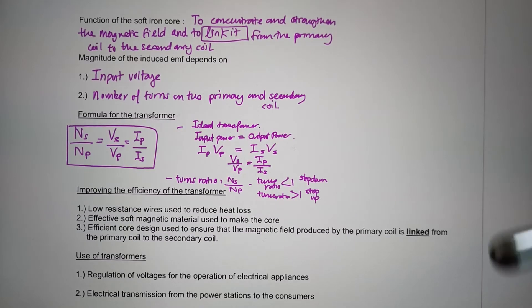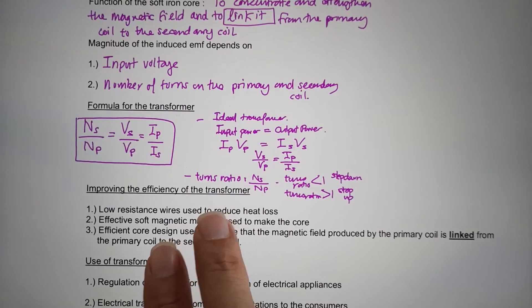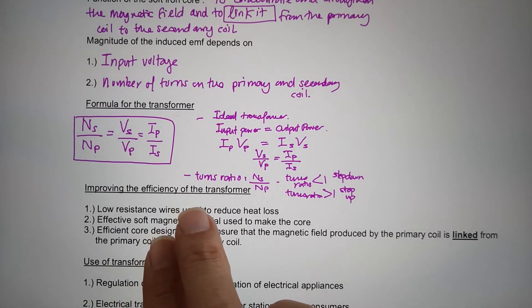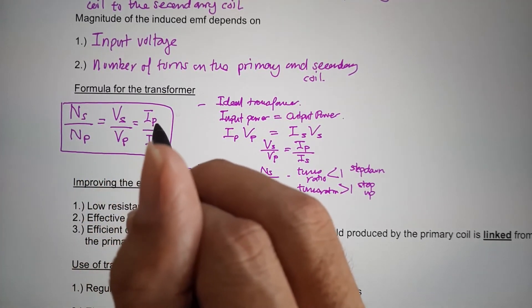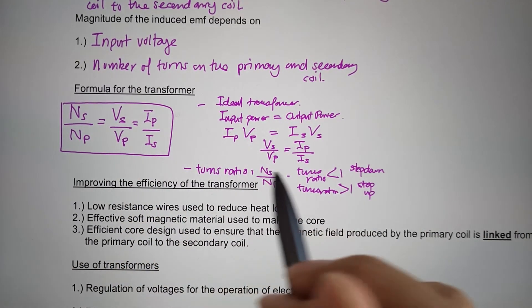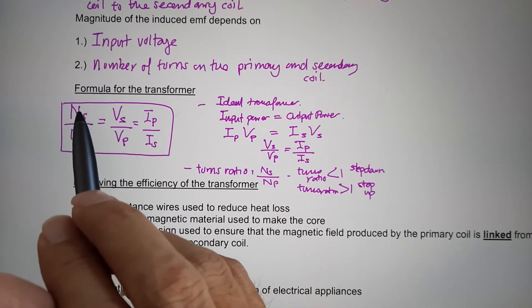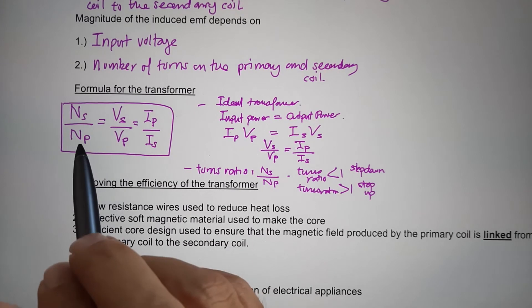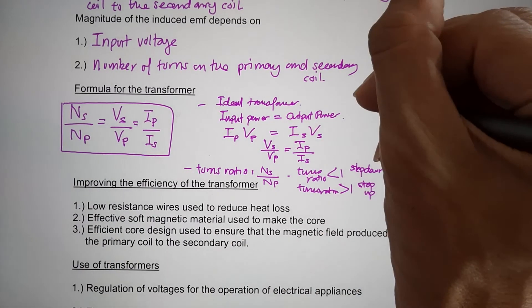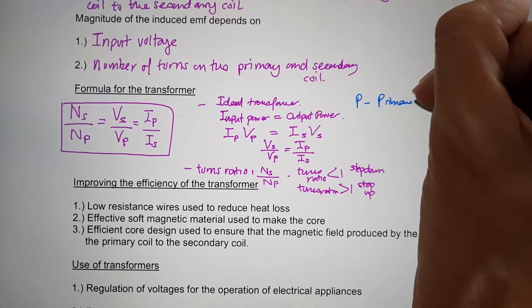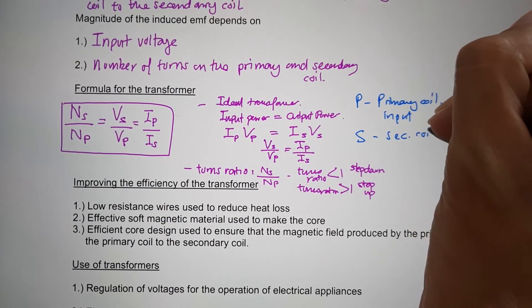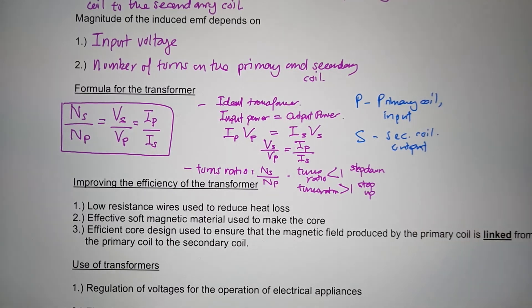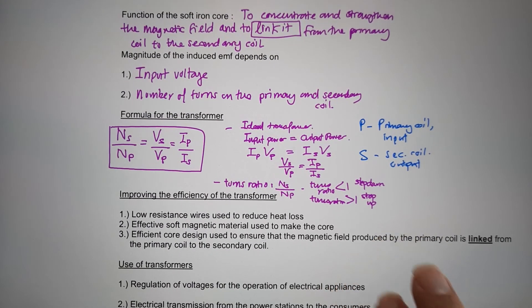The transformer section is the only part of this chapter with calculations. The key formula to remember is: NS over NP equals VS over VP, and this equals IP over IS — not IS over IP. S stands for the secondary coil (output side) and P for the primary coil (input side). Also use P equals IV and related formulas. Know the uses of transformers as well.